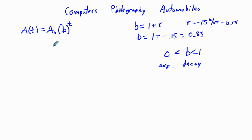So our function that we're going to have, we're going to have a car that starts in value at $14,000. So we'll say A sub 0 equals $14,000. And r is going to be equal to negative 0.15, and for that, we get our base is going to be equal to 0.85. So A of t is equal to 14,000 times 0.85 to the power of t.